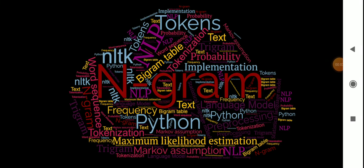N-gram language modeling is the way of determining the probabilities of any sequence of words. Language modeling is used in a wide variety of applications such as speech recognition, spam filtering, etc. In fact, language modeling is the key behind the implementations of many state-of-the-art natural language processing systems.